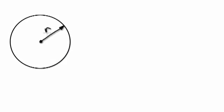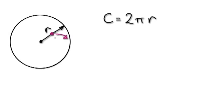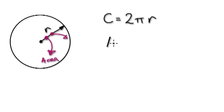Let me give you some examples. With a circle, given the radius of a circle, you can always jump to the circumference by using this formula: C equals 2 pi r. So if someone gives you the radius, you can always jump to the circumference. And from the radius, you can also find out the area of a circle by using this formula: A equals pi r squared.